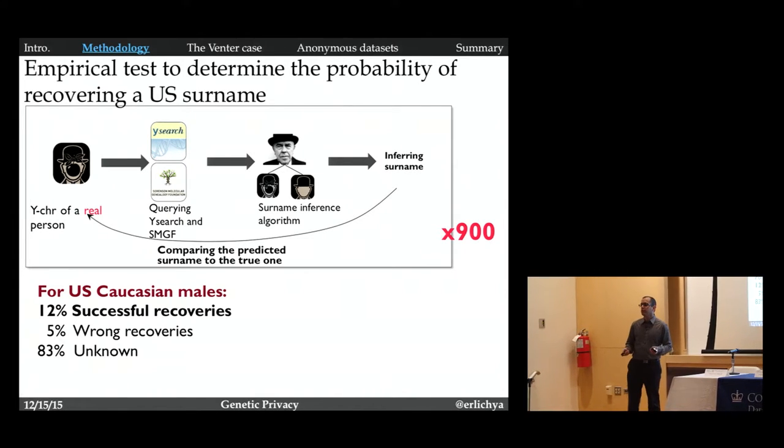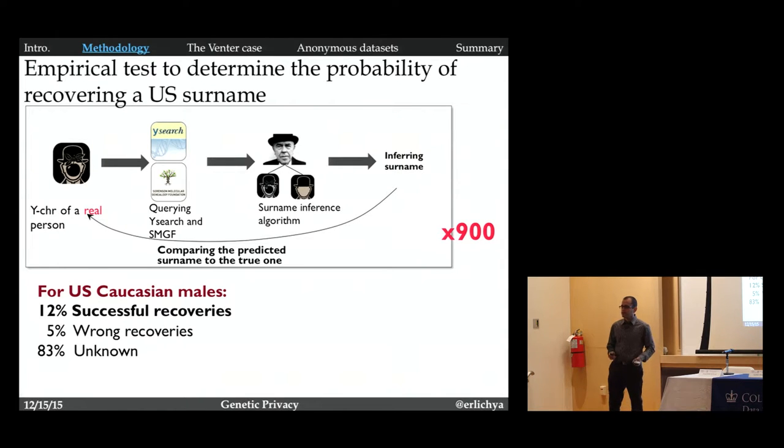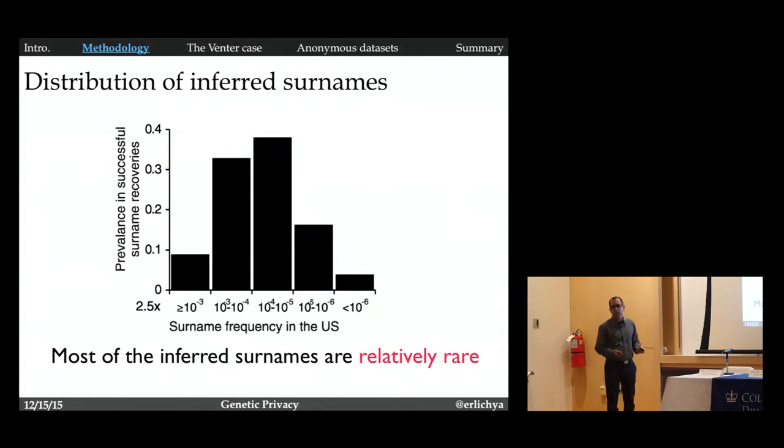Another question is, you know what? Maybe I just get all these common surnames, Smith, right? That doesn't give a lot of information because there are so many people with common surnames. But in fact, what we get in this process are the relatively rare surnames. This is a distribution of the surname frequency in the U.S. and how many successful recoveries we have. On average, this process of recovering the surname reduces the search space by 5,000-fold. If I start with 310 million individuals in the U.S., by the Y chromosome I know this is a male, I go to 160 million individuals. And then by the surname, I go to a group of about 40,000 individuals.